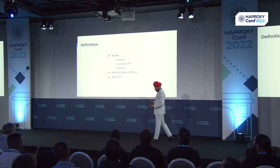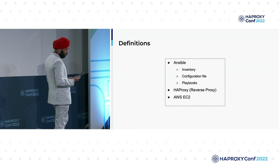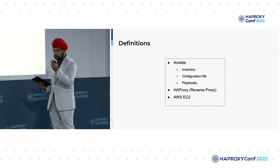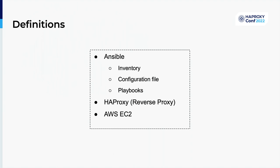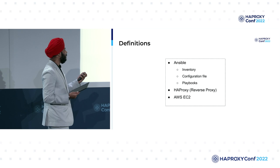Now the definitions. We have Ansible, HAProxy, and AWS. For Ansible, we'll be considering the playbooks, the inventory, and the configuration. The inventory file contains the list of servers; configuration handles logging, etc.; and playbooks are the scripts we use to run the whole code. HAProxy doesn't need any introduction, and for AWS we'll mainly be looking at EC2 and services revolving around it, such as security groups and VPC.